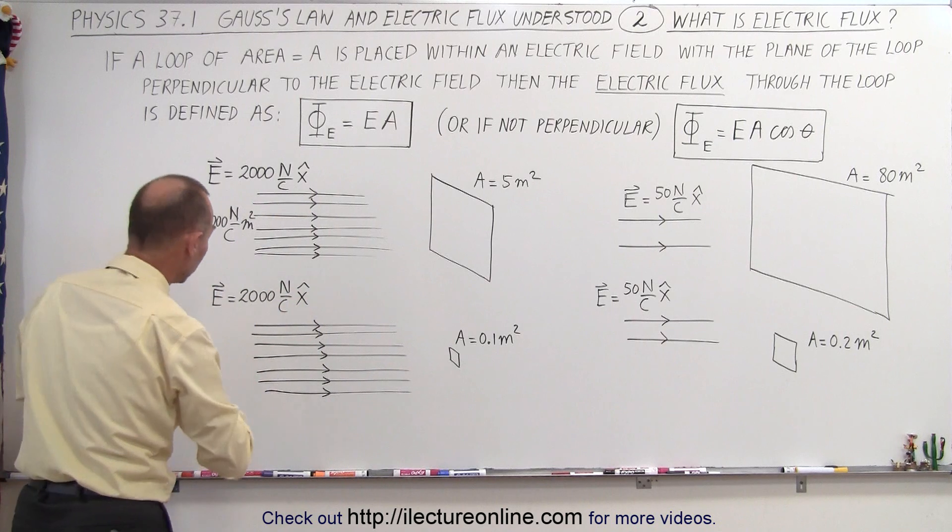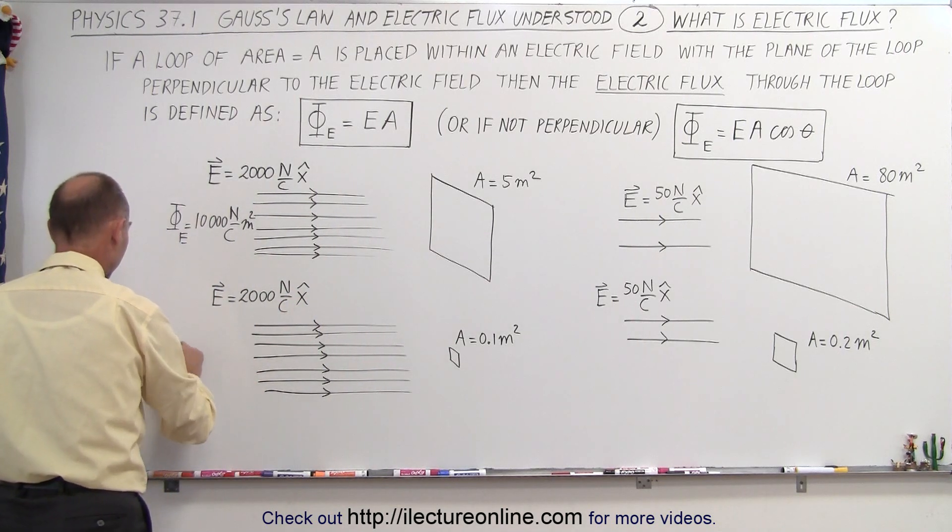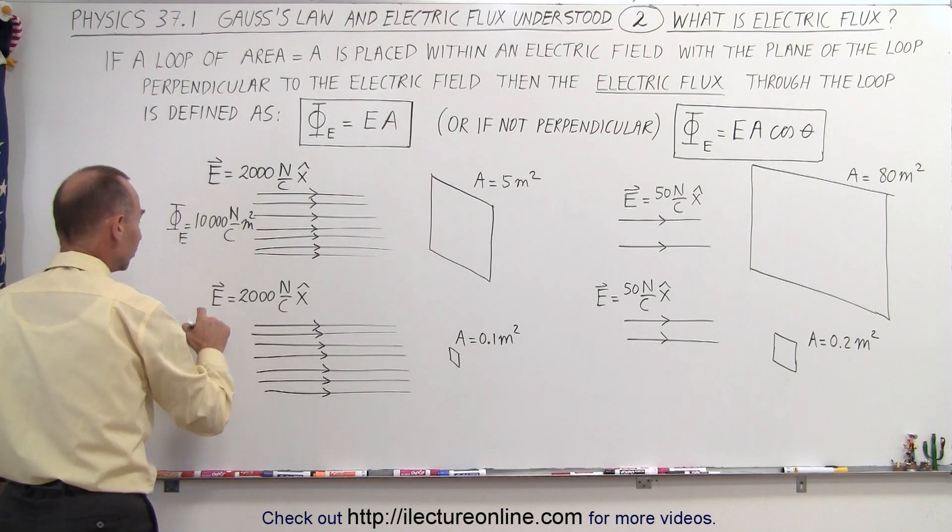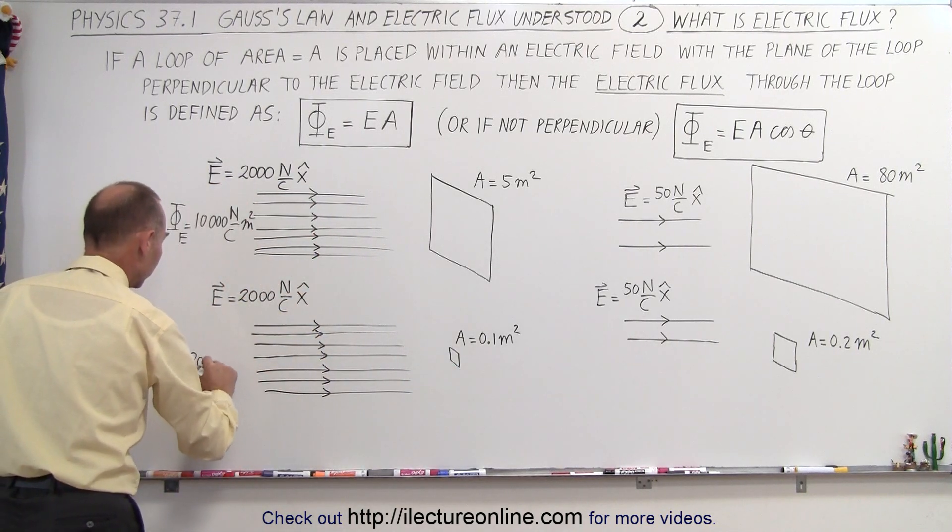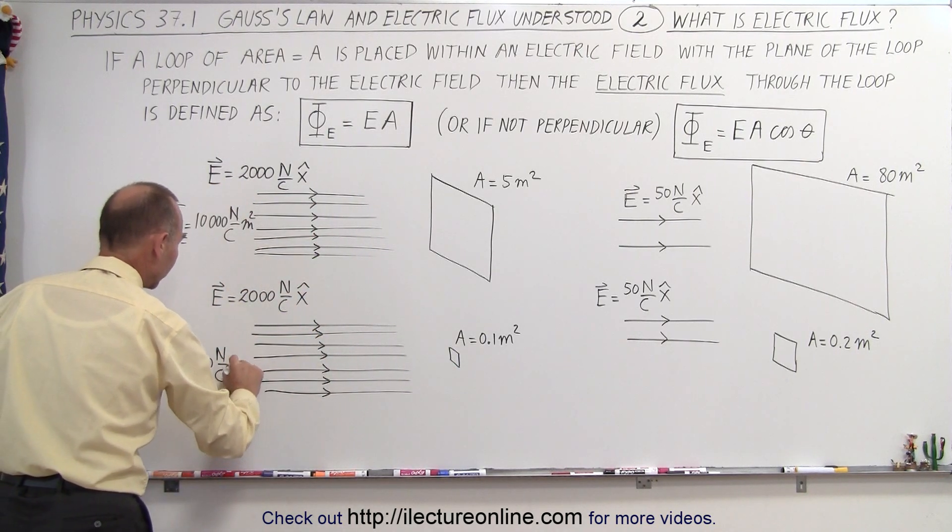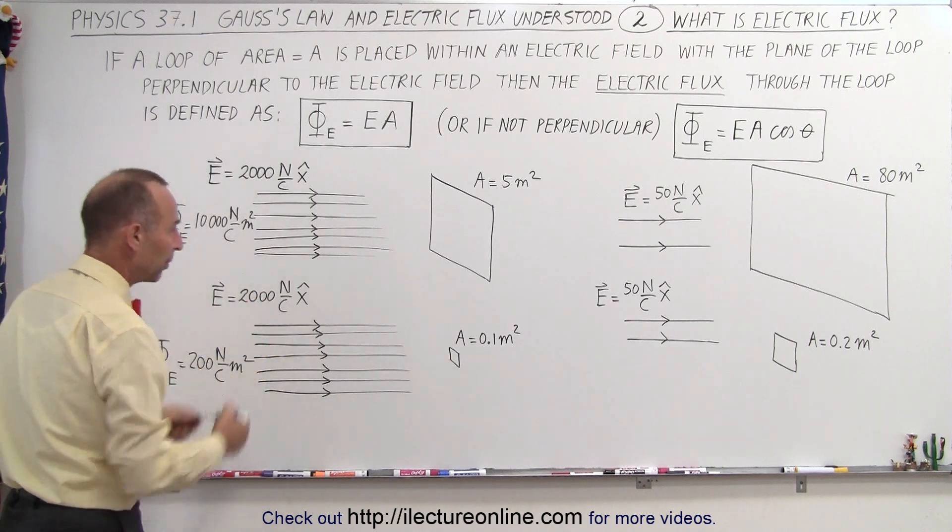the same field, just a smaller loop, you can see that the electric flux will in this case be equal to 2,000 times 0.1, which makes it 200 N per Coulomb times meters squared, so simply the product of those two.